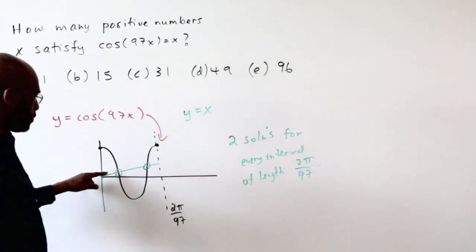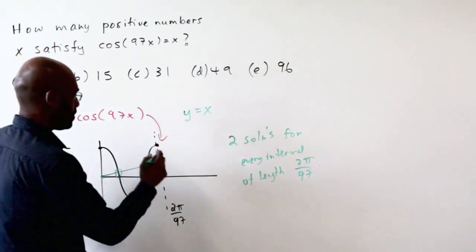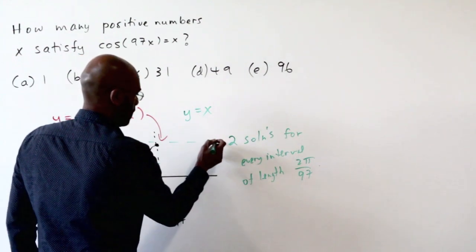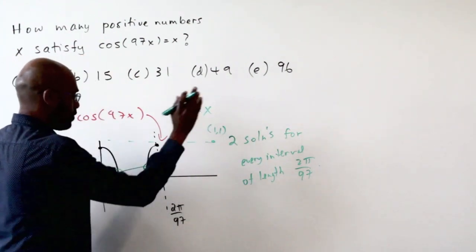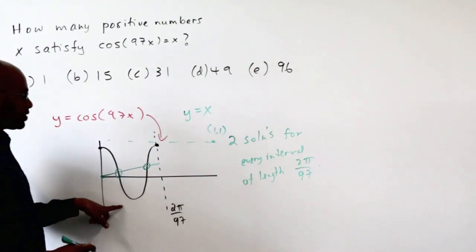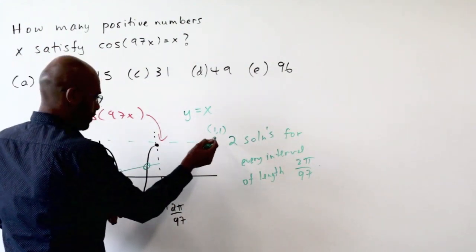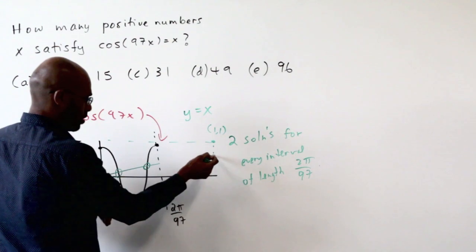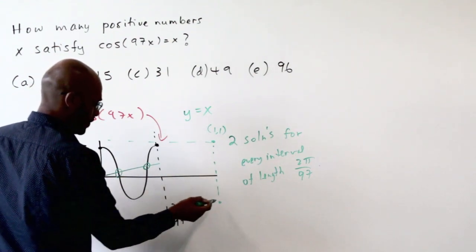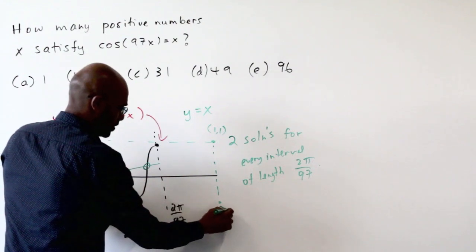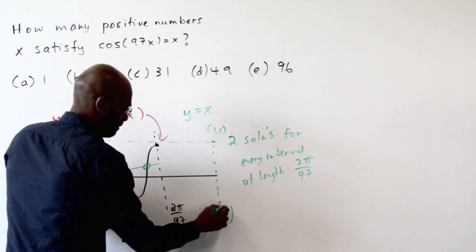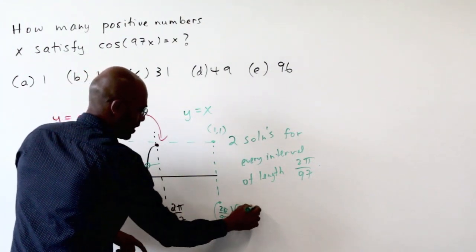This line y equals x will keep going until it hits the value 1, 1. After that, it won't intersect the graph y equals cosine 97x at all. So that then tells us that our cutoff point here is roughly when we get a 1, which is about this many periods.